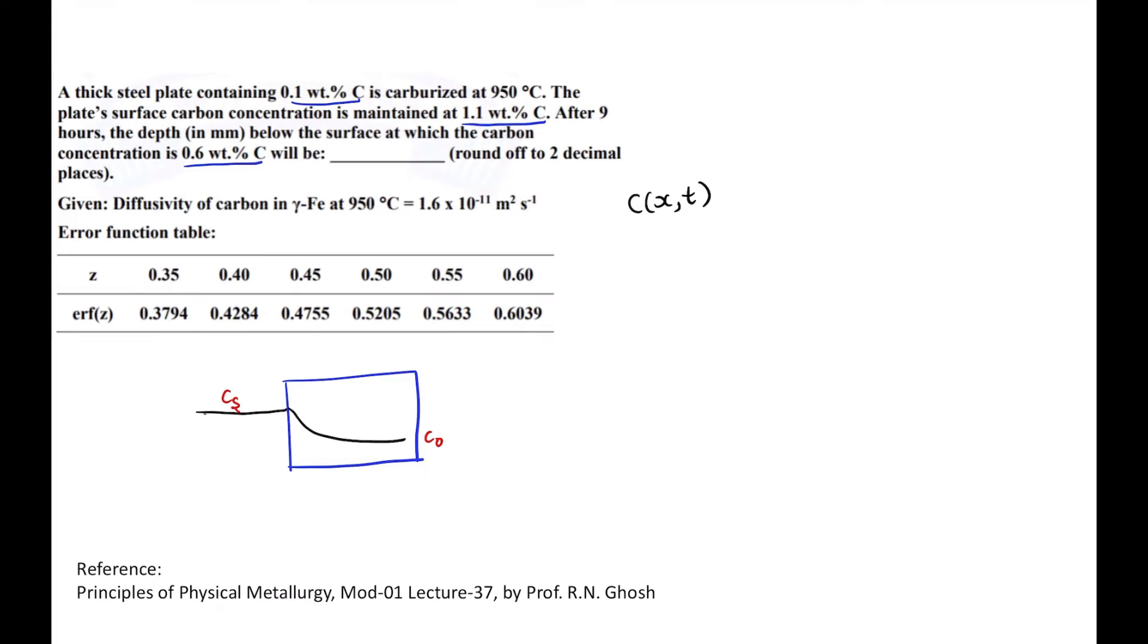we have C(x,t), that means C, the concentration of carbon at a particular depth x and after a particular time t, will be equal to C₀ minus (C₀ - Cs) times the error function of x/(2√Dt).